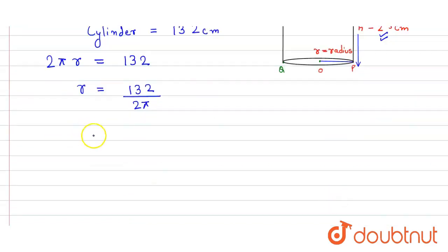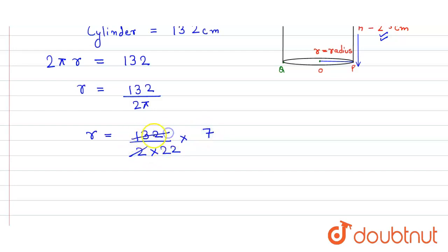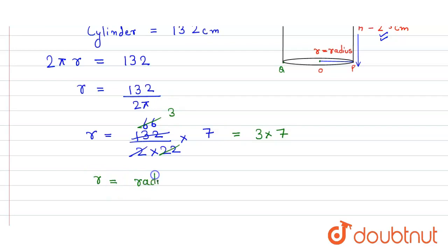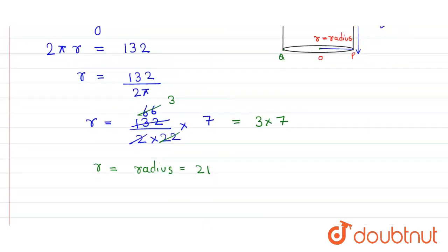Now we simply solve it. The 2 cancels with 132 to give 66, and then 22 cancels with 66 to give 3. So we get 3 into 7, thus the radius r is equal to 21 centimeters.